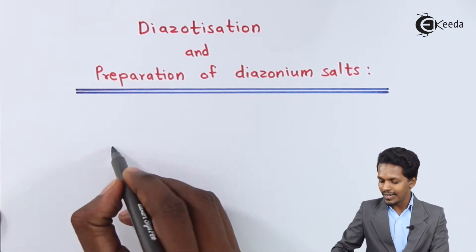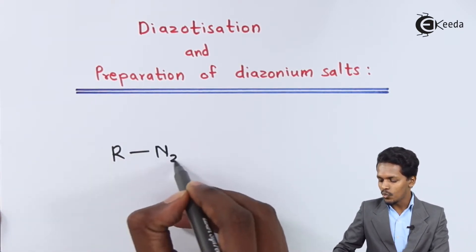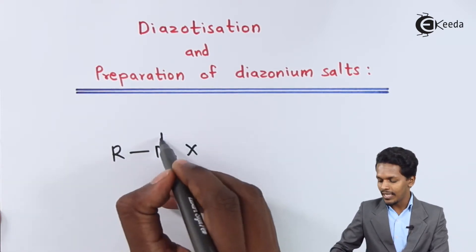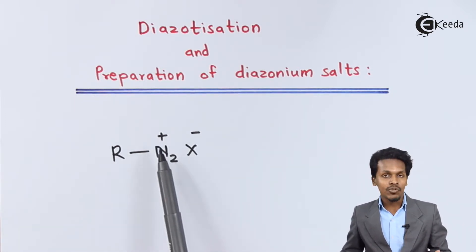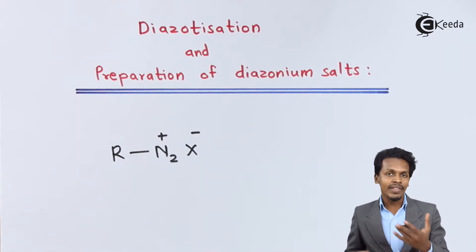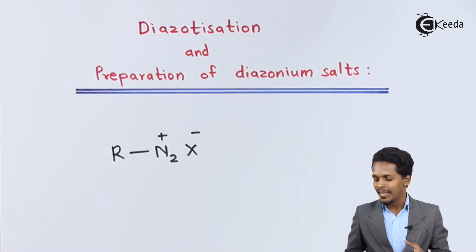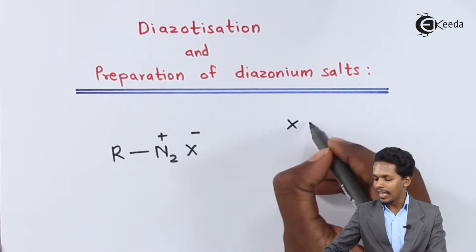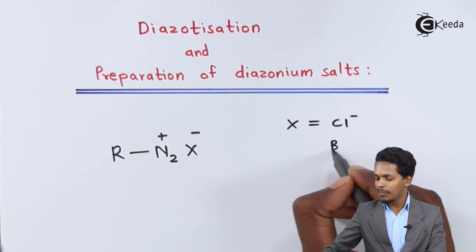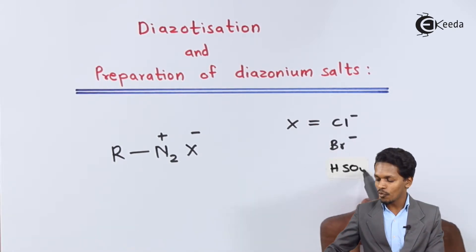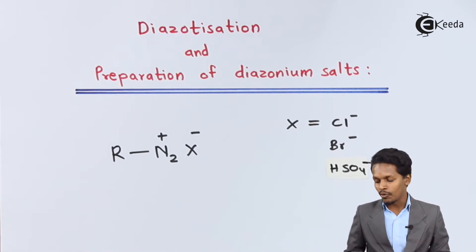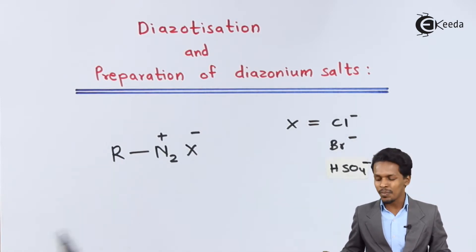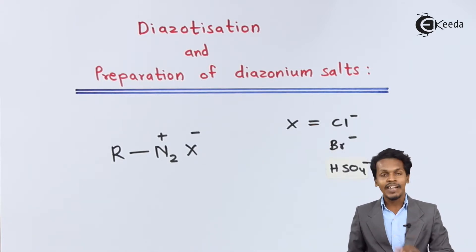Diazonium salts have a general formula that can be written as R-N2+X-, where N2 acquires a positive charge while X acquires a negative charge. This N2+ is basically known as diazonium. This X could be a halogen atom like Cl-, Br-, or the HSO4- group. R could be an alkyl group or an aryl group. That is the reason it is known as diazonium salt.